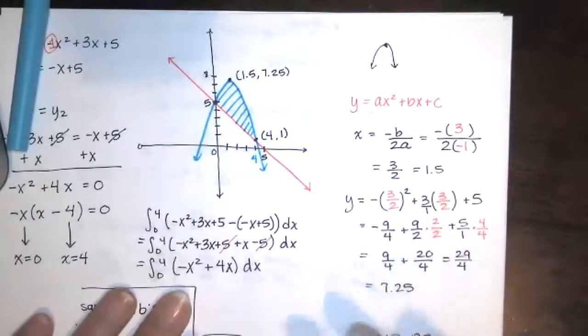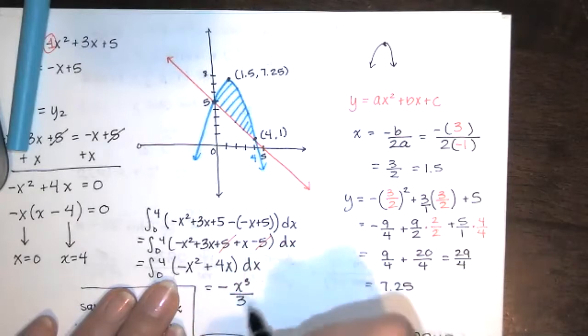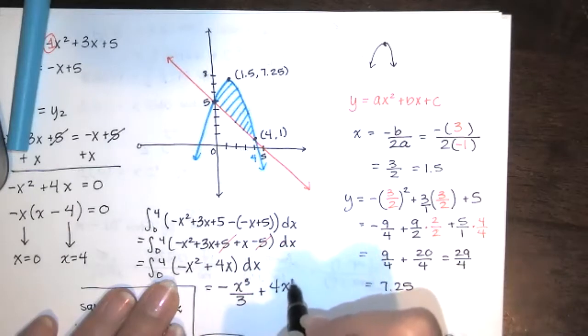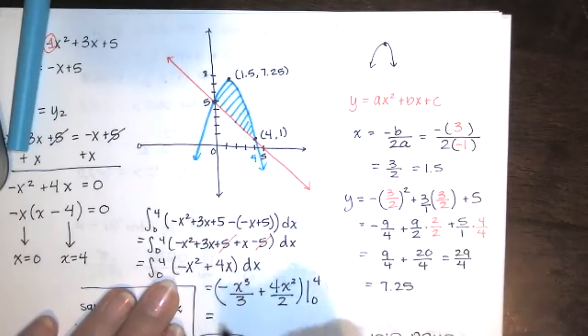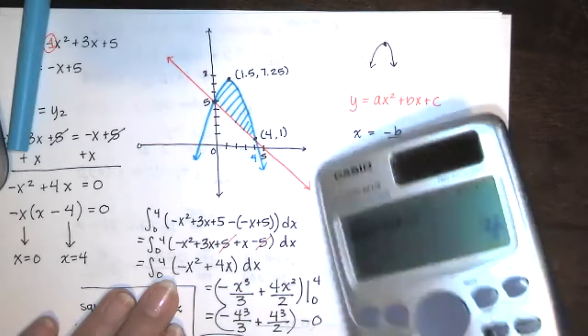Now, I'm using scratch paper. We're going to add 1 to the exponent here and divide by the new exponent. Bring that constant down. Then bring that 4 down. It's a constant. Add 1 to the exponent and divide by the new exponent. Plug in 0 and 4 and subtract. So, we're going to get 4 cubed. Negative 4 cubed over 3 plus 4 times 4 squared is going to be another 4 cubed over 2. And then you evaluate that at 0 and you get 0, of course. So, we end up with 4 cubed over 2, 64 over 2 minus 64 over 3. And it gives us 32 over 3.